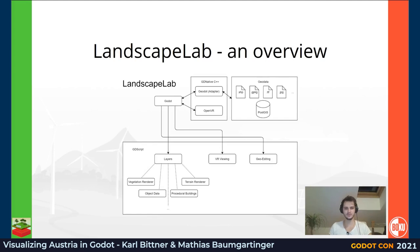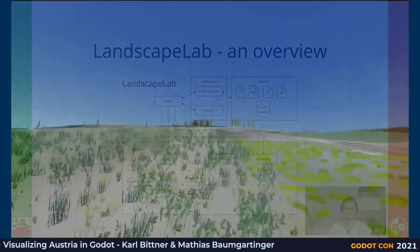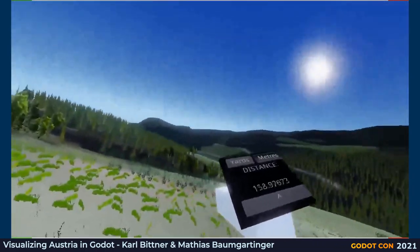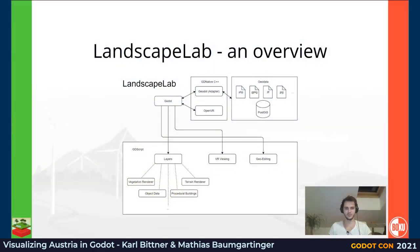The current state looks as follows. Firstly, the Godot base uses two GDNative implementations: one for loading geodata called Geodaw, more detail later; and another GDNative library for VR devices called OpenVR, which enables VR viewing and editing with tools like a compass or a distance measure. Our layers are inspired by QGIS, an open source 2D geodata editor. This layer system provides a common base architecture for all implementations rather than individual, isolated, improvised modules. The basis is the terrain layer with vegetation, procedural buildings and objects such as wind turbines or park benches on top.